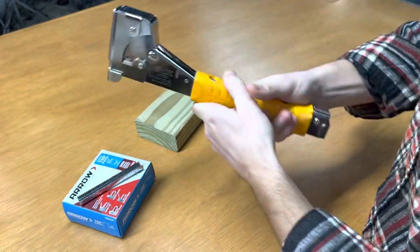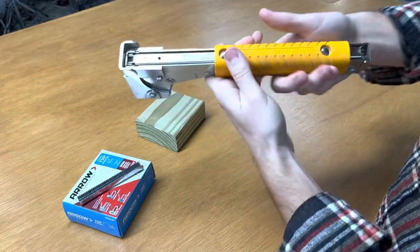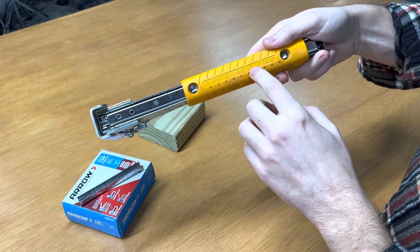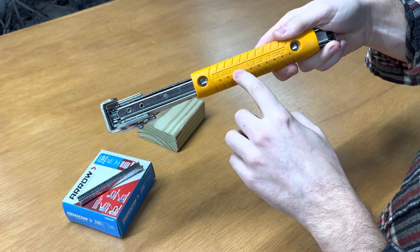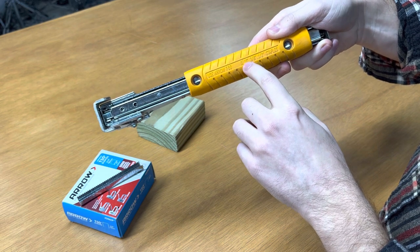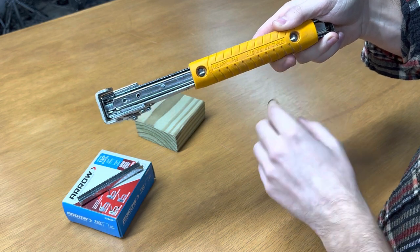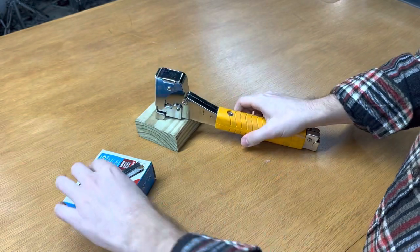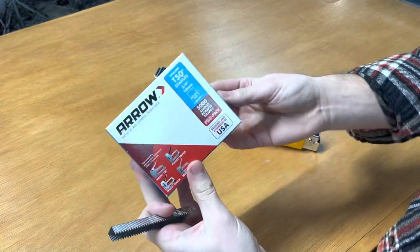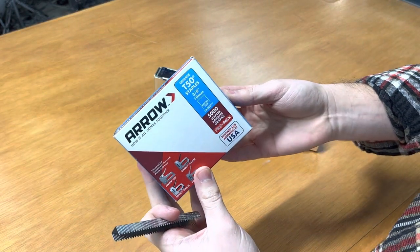I've already got some in there. This takes three different sizes of staples - it says use Arrow T50 staples. The sizes you can use are 5/16, 3/8, and 1/2 inch staples. I've got some here - these are the ones I use for the house wrap, these are the 3/8 inch T50 staples.